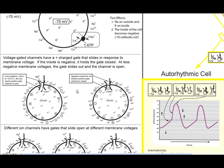Now we introduce voltage-gated channels. Voltage-gated channels have a positive region tied to the gate of the channel, and that positive region can slide in or out based on the voltage inside the cell. Looking at the closed state, the inside of the cell is at minus 70. Those positive charges are attracted to the minus 70, so the gate stays down — it's closed and no ions can go in or out.